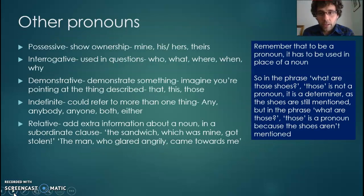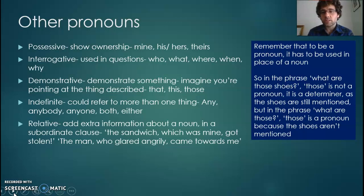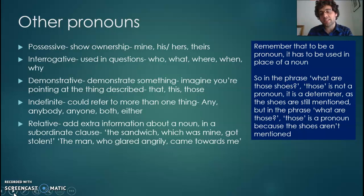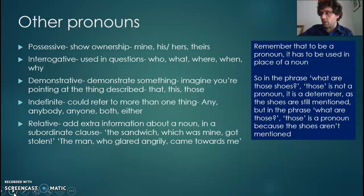There are other types of pronouns. Possessive pronouns show who owns something — 'that's mine,' 'that's hers,' 'that's theirs.' Interrogative pronouns are used in questions: 'who did this?' — the 'who' is still a pronoun replacing the name of the person but used in a question. 'What did you do?' 'Where is it?' — 'where' is used in place of the noun that would describe where it was. Demonstrative pronouns literally demonstrate — imagine you're pointing: 'what are those?' 'what's that?' You use the word rather than naming the thing.